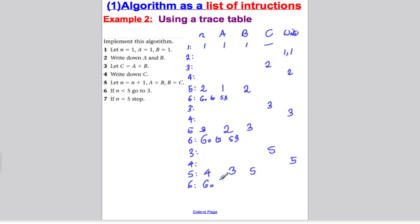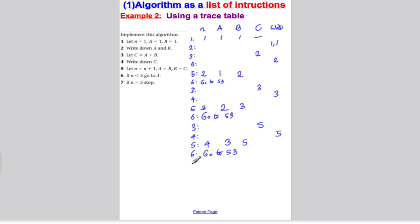And step six, go back to step three again because N is only four. So go back to step three and then you've simply got let C equals A plus B. So let C be eight. Step four, write down C. So write down eight. Step five, let N be five. Let A be what B was and let B be what C was. So A would therefore be five and B would therefore be eight.